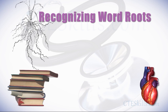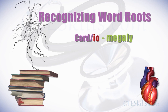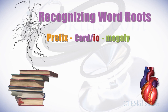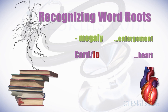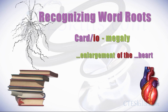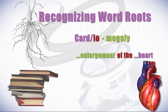An example: cardiomegaly. The method for deciphering a medical term is to start with the last word part and work backward through each element to the first, which would most likely be a prefix. So you decipher the suffix first — in this case 'megaly,' which means enlargement. The next element is the word root: 'cardio,' which means heart. The complete meaning of cardiomegaly is enlargement of the heart — indicating that the heart is larger than normal.